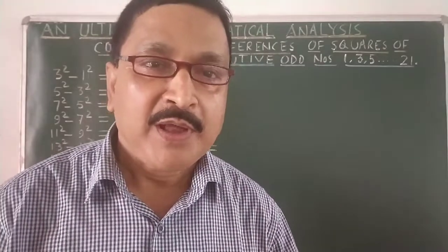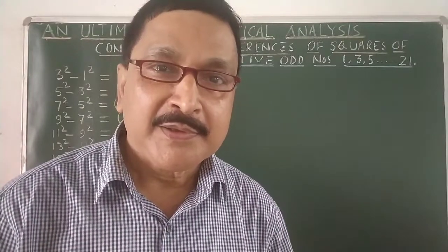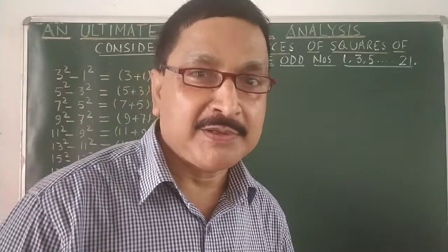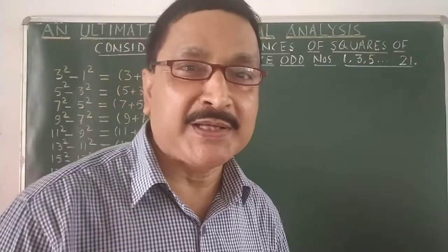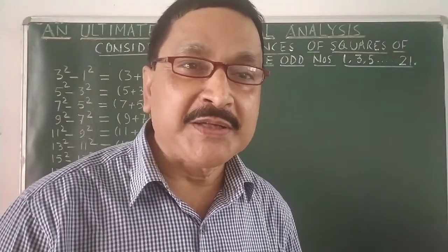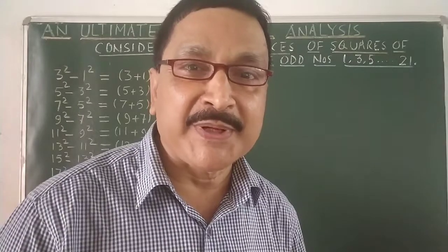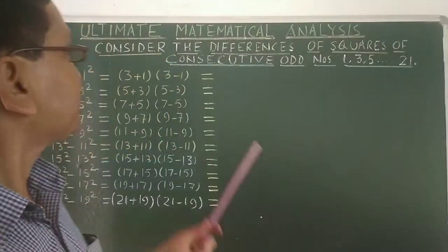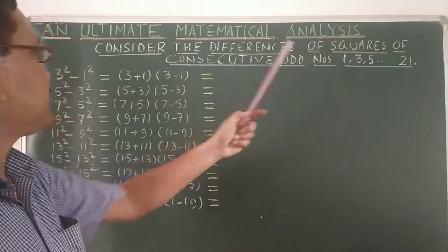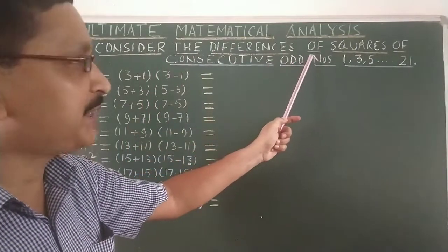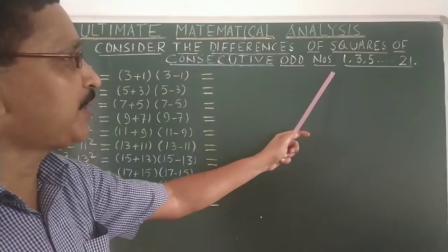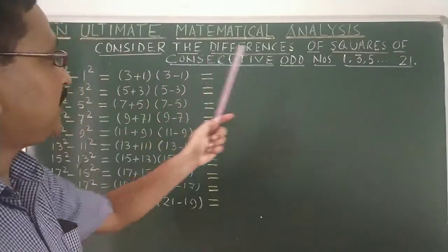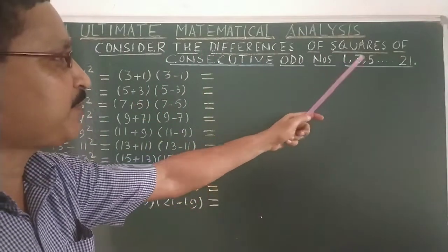Hello students, I am Shashi Bhutan Nisra. Today I have come along with an ultimate mathematical analysis. Just see the analysis — what type of mathematical analysis has been done. The creativity in the field of mathematics can be developed among the students of any group, any class. So just see. Consider the differences of squares of consecutive odd numbers starting from 1 and ending to 21.